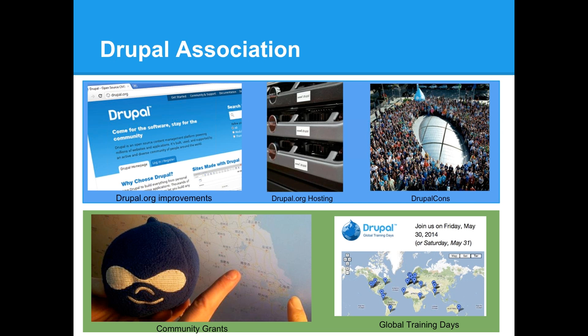Just a little bit about the Drupal Association. Our mission is to foster and support the Drupal community so they can collaborate together as they innovate the project. There are so many ways to help with the community. We host Drupal.org and we're building a tech team to improve the site. We also provide grants for community members to fund different events and help the community grow — for example, we just did a community grant for a new camp in China.